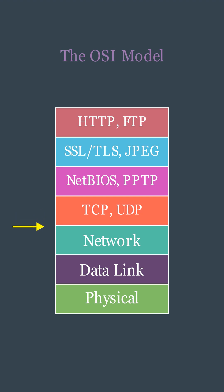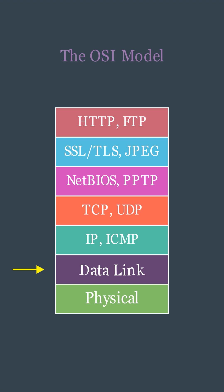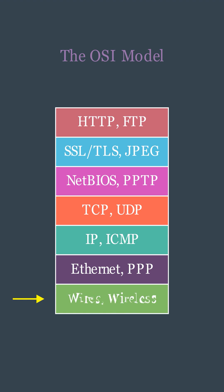The network layer determines the best path for data to travel across the network. The data link layer adds error checking and physical addressing to prepare data for transmission. Finally, the physical layer deals with the actual hardware, cables, radio waves, that carries the raw bits of data.